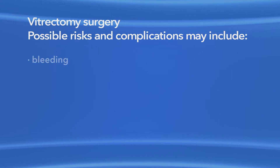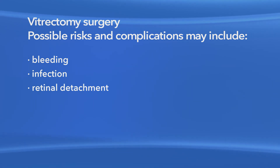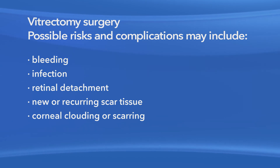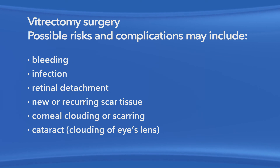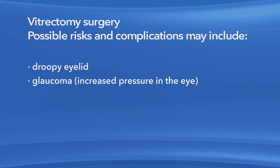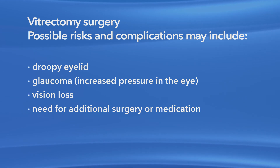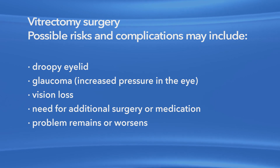As with any procedure, there are risks of side effects and complications with vitrectomy surgery to repair a macular pucker. These may include bleeding, eye infection, retinal detachment, new or recurring scar tissue inside the eye, clouding or scarring of the cornea, clouding of the lens of the eye or cataract, a droopy eyelid, increased pressure in the eye called glaucoma, vision loss, and the possible need for additional treatment including medication and surgery. Also, your eye problem could remain or get worse.